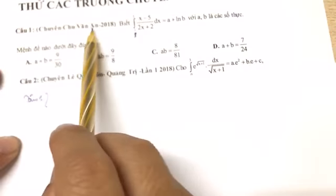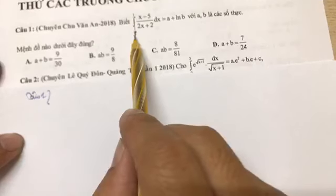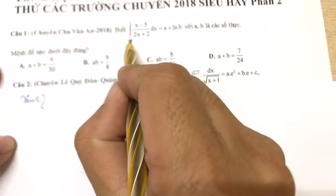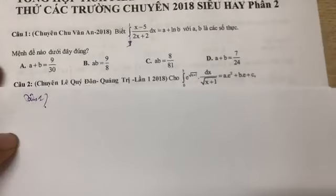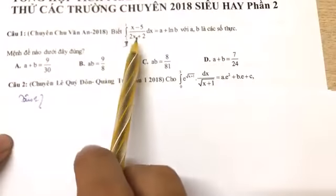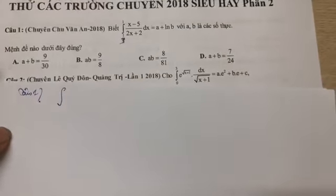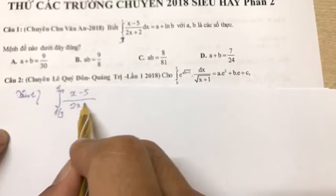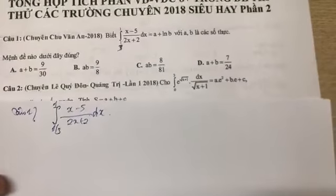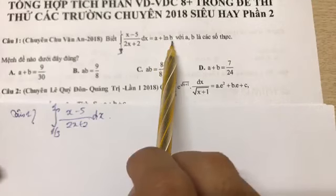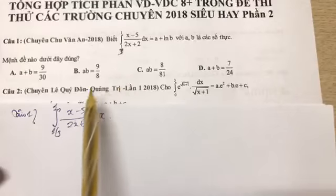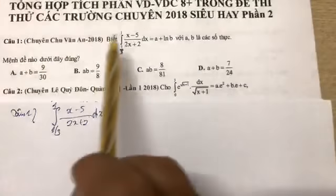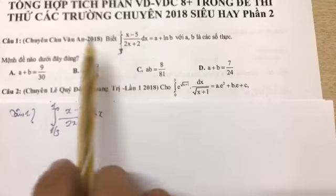Đây là đề của trường chuyên Chu Văn An. Người ta cho tính tích phân từ 1/3 đến 1 — chú ý cận là 1/3, không phải 1/2 như trong đề thầy gửi. Tích phân của x^5 chia cho (2x + 2) dx. Kết quả bằng A + ln(B), với A, B là các số thực. Người ta hỏi A cộng B, A nhân B là biểu thức nào.